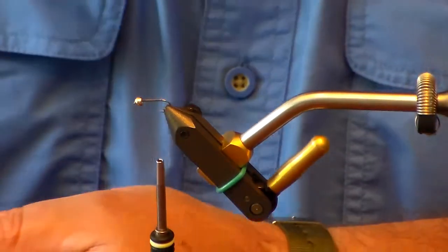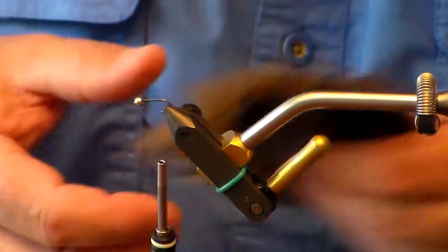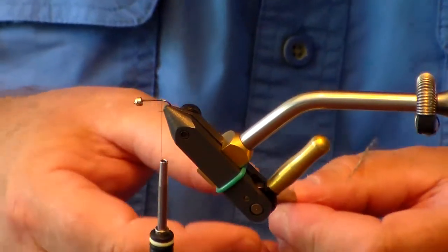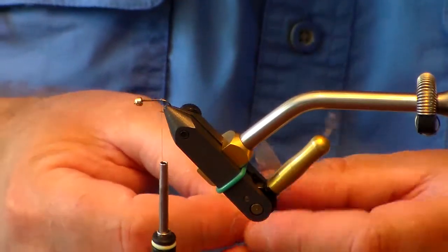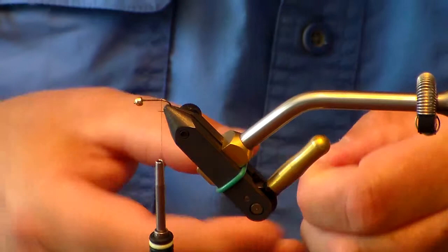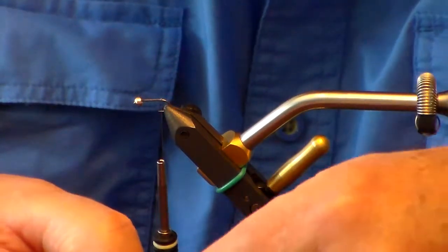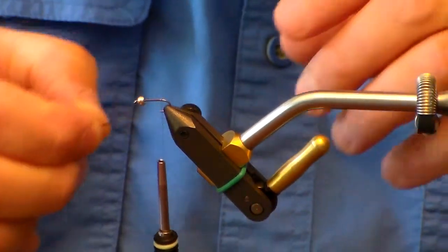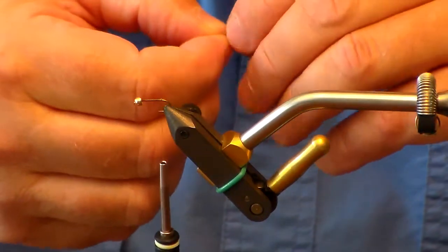Grab our Cote de Leon, and you want about four or five tail fibers. Get those lined up, and you want them to be somewhere around the length of the shank of the hook.